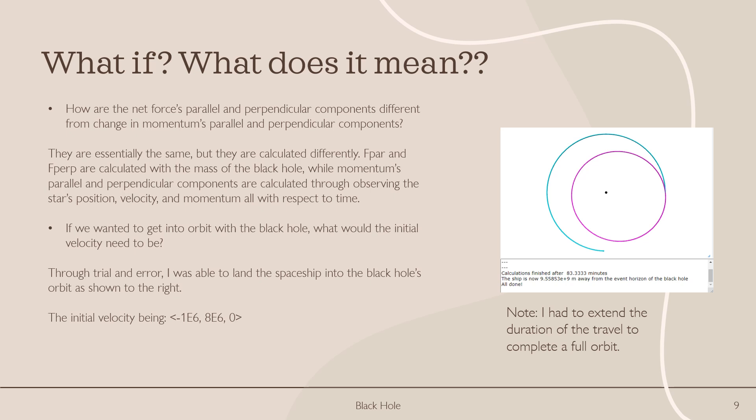So now let's ask some questions. How are the net forces parallel and perpendicular components different from change in momentum's parallel and perpendicular components? Well, they're essentially the same, but they're calculated differently. The net forces parallel and perpendicular components are calculated with the mass of the black hole, while the momentum's parallel and perpendicular components are calculated through observing the star's position, velocity, and momentum, all with respect to time.